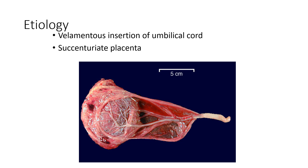The next condition is succenturiate lobe of the placenta. There are 20 lobes in the placenta. In succenturiate lobe of the placenta, all 19 lobes may be positioned like a normal placenta, but one or two lobes — sometimes one lobe — may be located away from the placenta. If a lobe is located away from the placenta, a few blood vessels will be moving to that lobe also. That type of placenta is known as succenturiate placenta and that lobe is known as the succenturiate lobe.